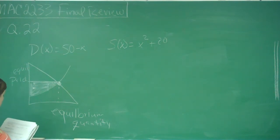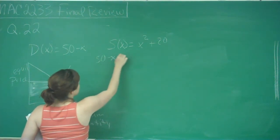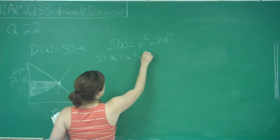So what we need to do is first set them equal to each other because we need to find equilibrium quantity before we can find equilibrium price. So I have 50 minus x is equal to x squared plus 20.